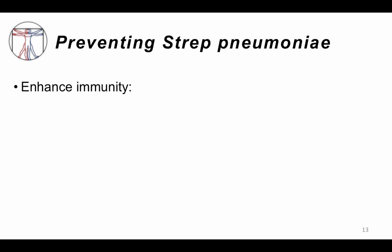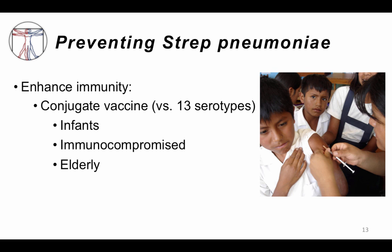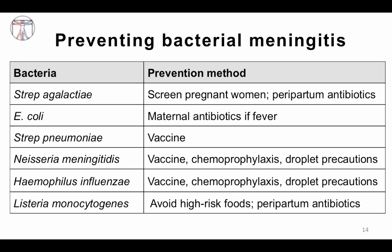For strep pneumo prevention, we want to enhance immunity. There's a conjugate vaccine with 13 serotypes given to infants and immunocompromised patients. The conjugate vaccine is now also being given to elderly patients, and some recommendations have recently been updated.